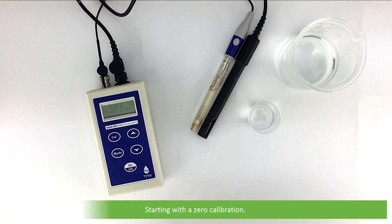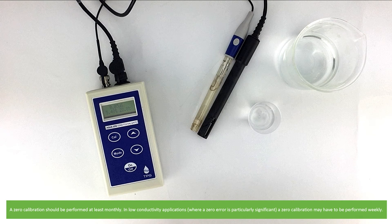Starting with zero calibration. A zero calibration should be performed at least monthly. In low conductivity applications where a zero error is particularly significant, a zero calibration may have to be performed weekly.